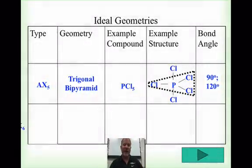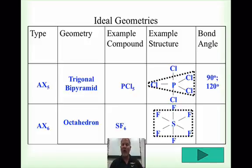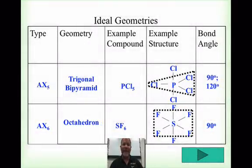The next ideal geometry is AX6, called octahedral, with the example sulfur hexafluoride, SF6. This is another expanded octet — sulfur has 6 valence electrons, and the two lone pairs each separate out to form six bonds. Four fluorines are on the same plane forming a square, and one fluorine goes up while one goes straight down. All fluorines are 90 degrees in relationship to the plane, and within the square plane they're also all 90 degrees. So it's 90 degrees straight around on the octahedron.